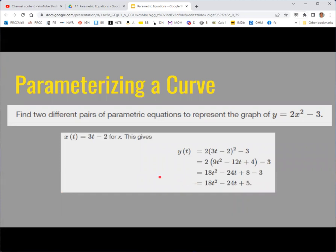These parameterizations are not unique. You could pick some other parameterization for x instead of x equals t and put that in. This would still represent the same curve of y equals 2x squared minus 3. So multiple parameterizations can result in the same curve.